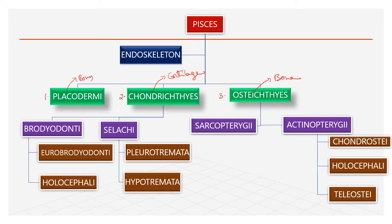Chondrichthyes is subdivided into two subclasses: Bradiodonti and Selachi. In Bradiodonti, there are two orders — Eurobradiodonti and Holocephali. Selachi has two orders: Pleurotrimeta and Hypotrimeta.